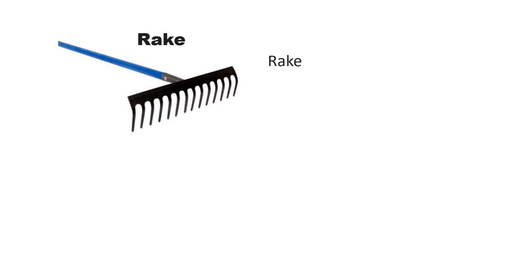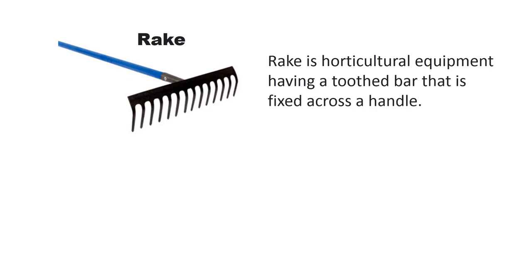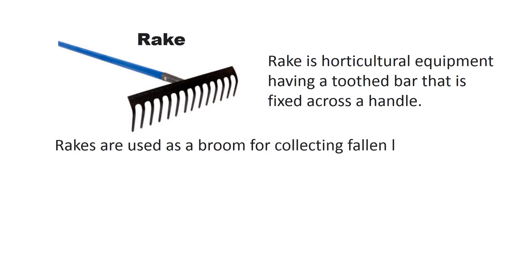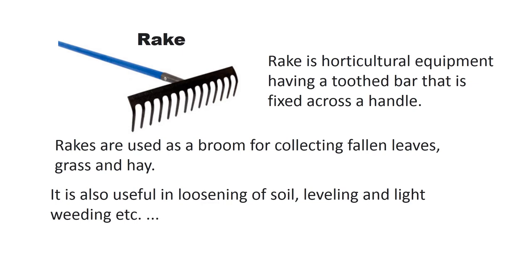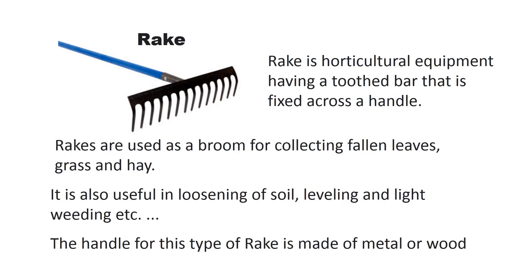A rake is a harvesting tool having a toothed bar fixed across a handle. Rakes are used like a broom for collecting fallen leaves, grass, and hay. It is also useful for loosening soil, leveling, and light weeding. The handle for this type of rake is made of rattan or wood.